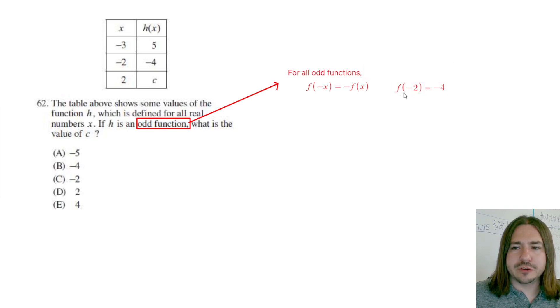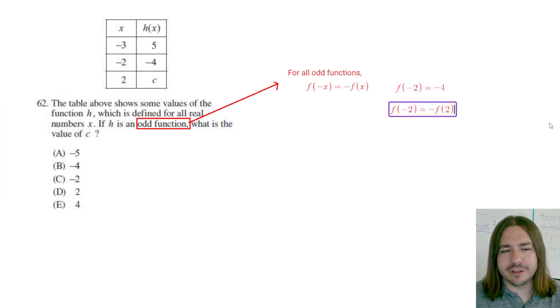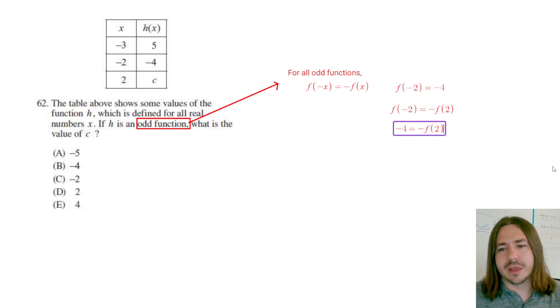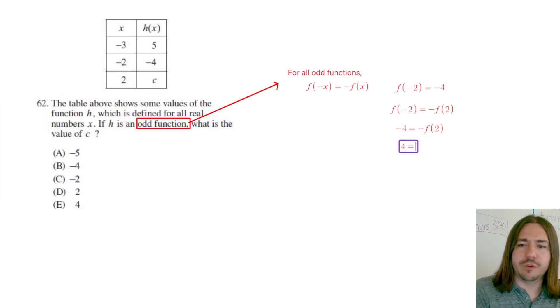Since it's odd, we can say f(-2) = -f(2). We know f(-2) = -4, so -4 = -f(2). To find what f(2) is (which is c), we divide both sides by -1 and get f(2) = 4. So our answer is 4.